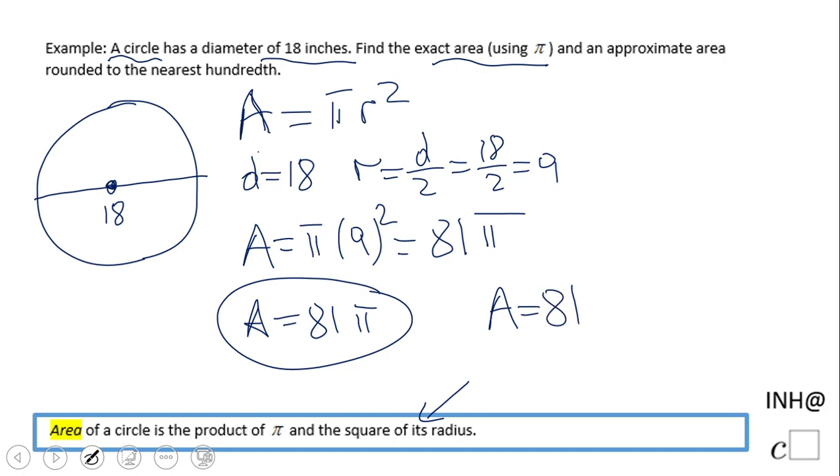We're going to grab a calculator and do a simple multiplication. Most calculators have π in them. We're going to do 81 times π, and I get 254.4615. I'm going to round this to the nearest hundredth.